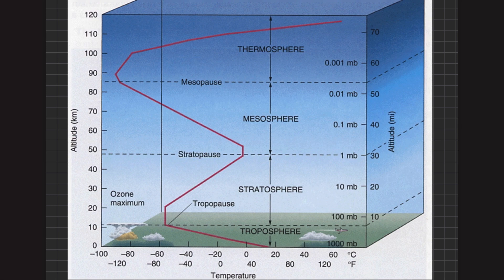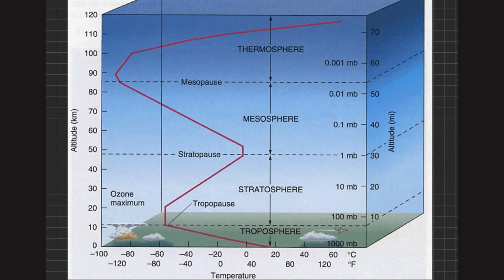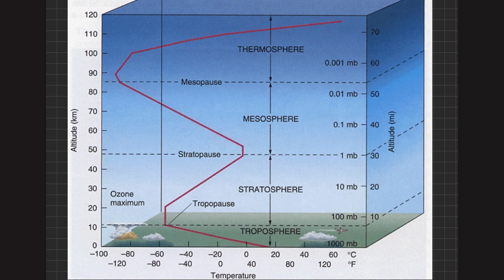In the stratosphere, the temperature further increases until it reaches the stratopause, where temperature does not change — reaching around 0°C. From the stratopause onward through the mesosphere, the temperature again decreases, reaching minus 80°C.